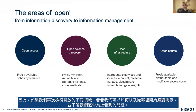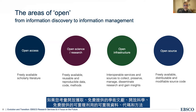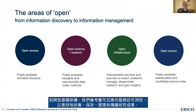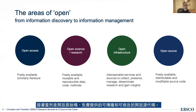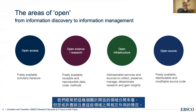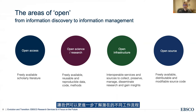Looking at the different areas of open and how we can address these challenges: open access focuses on surfacing trustworthy scholarly literature; open science goes beyond the article to related open data and other outputs like computational code and research methods that support reuse and reproducibility. We then look at how best to connect these applications within an open infrastructure to collect, preserve, manage, and support discoverability of research. And open source allows us to consider which applications give us the most flexibility in how they are deployed, supported, and extended to manage research outputs in support of research, teaching, and learning.